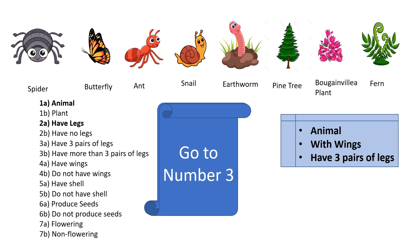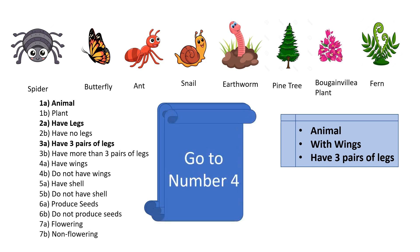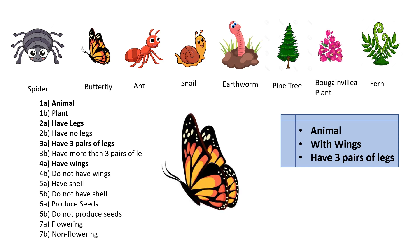We choose 3A, and the dichotomous key asks us to go to question number 4. Question number 4 asks whether the animal has wings or does not have wings. Based on the keywords, we know our animal has wings, so we choose answer 4A. Now we can find our answer — the organism is a butterfly. We know that a butterfly is an animal that has wings and three pairs of legs. This is how a dichotomous key works.